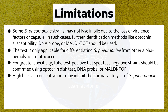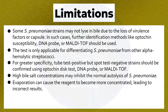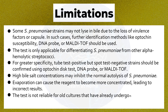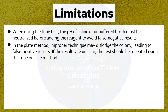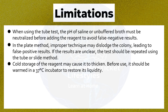Additional limitations: High bile salt concentrations may inhibit normal autolysis of S. pneumoniae. Evaporation can cause the reagent to become more concentrated, leading to incorrect results. The test is not reliable for old cultures that have already undergone autolysis. When using the tube test, the pH of saline or unbuffered broth must be neutralized before adding the reagent to avoid false negative results. In the plate method, improper technique may dislodge the colony, leading to false positive results. If results are unclear, the test should be repeated using the tube or slide method. Cold storage of the reagent may cause thickening; before use, it should be warmed in a 37 degrees Celsius incubator to restore liquidity.